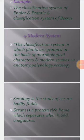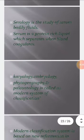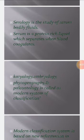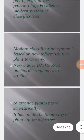The fourth and last system is the modern system. The classification system in which plants are grouped on the basis of morphological characteristics and some modern studies — like anatomy (internal structure), palynology (study of pollen grains), serology (study of serum and bodily fluids; serum is a protein-rich liquid that separates when blood clots or coagulates), karyology (study of chromosomes), embryology (study of embryo), phytogeography (study of distribution of plants), and paleontology (study of fossils of plants) — is known as the modern system of classification.